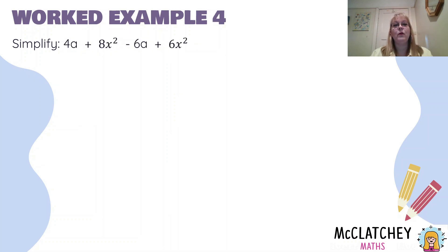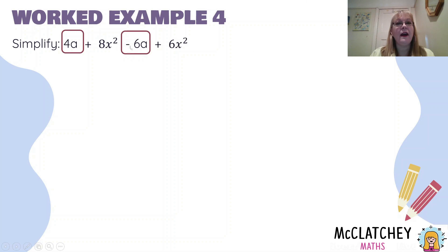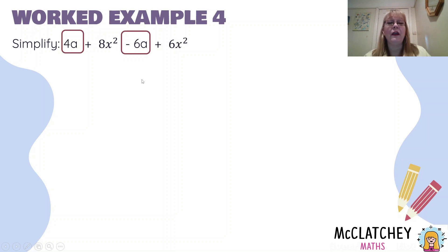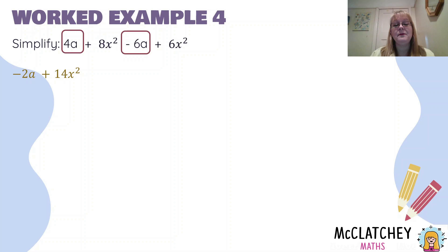In our next example, we've got powers introduced. I've got 4A — and remember this minus sign must go with the term afterwards, that's a common mistake people make, cutting it off and adding the two together, which is a big no-no. I've got 8x squared and 6x squared, which are like terms with one another. So: 4 take away 6 is negative 2, giving me negative 2A. 8 plus 6 gives me 14x squared.